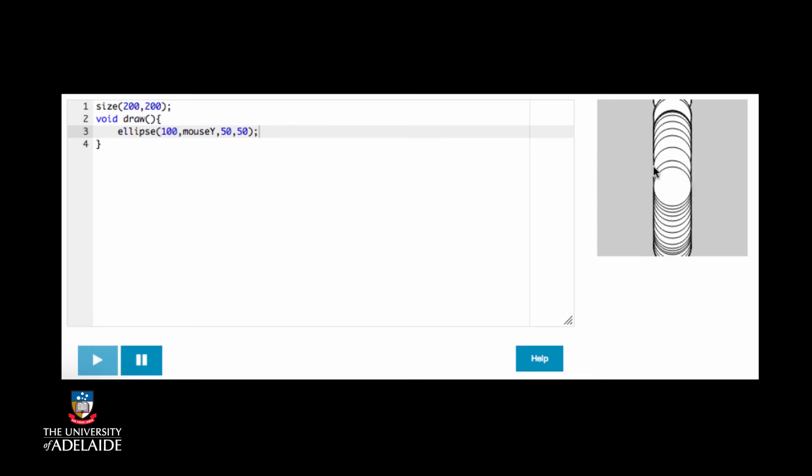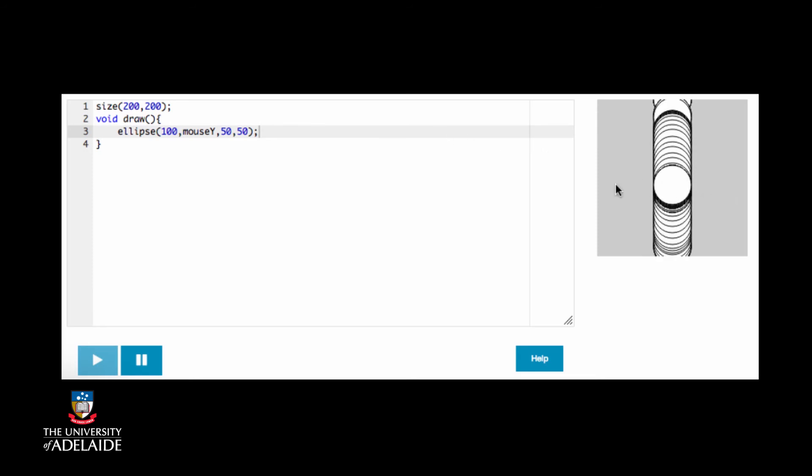Now the ellipse is following the mouse around, but only if it is moving up and down. Let's do something more complicated. Let's add a square that follows the mouse cursor on the horizontal axis, and keep the circle that follows the mouse on the vertical axis.